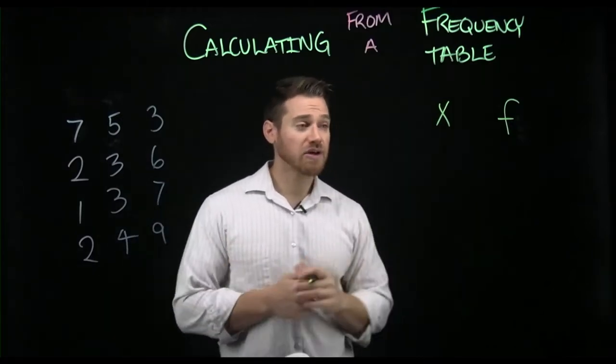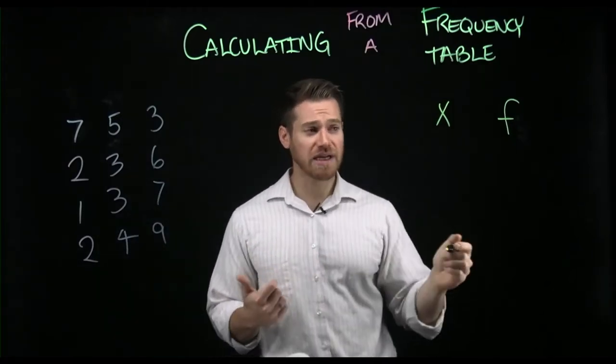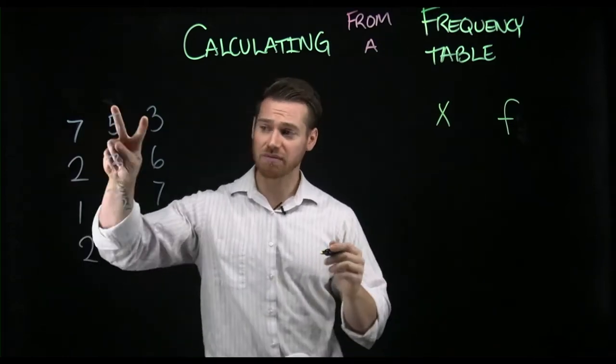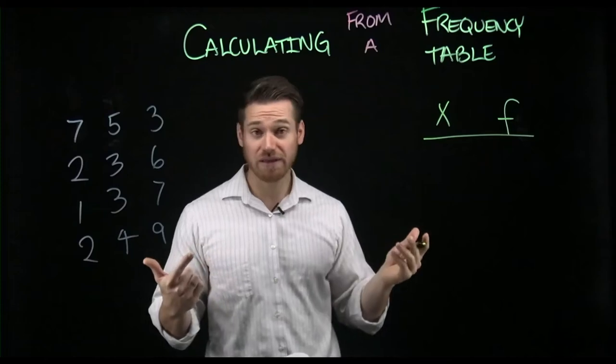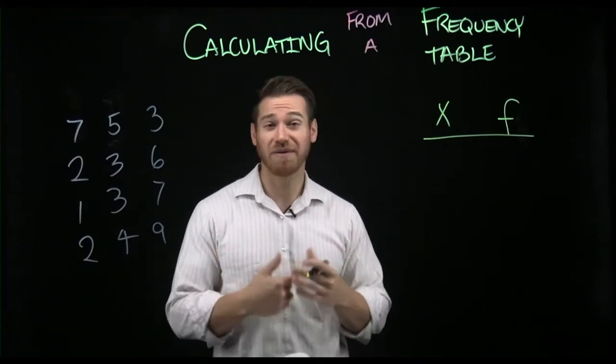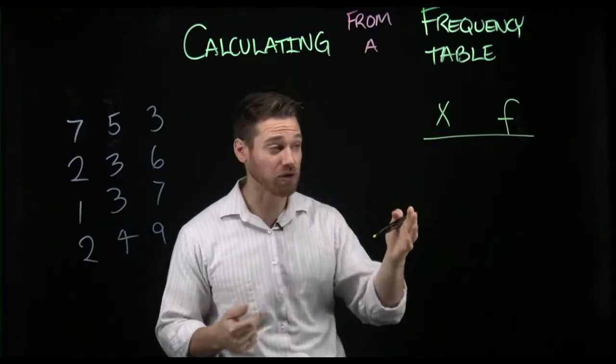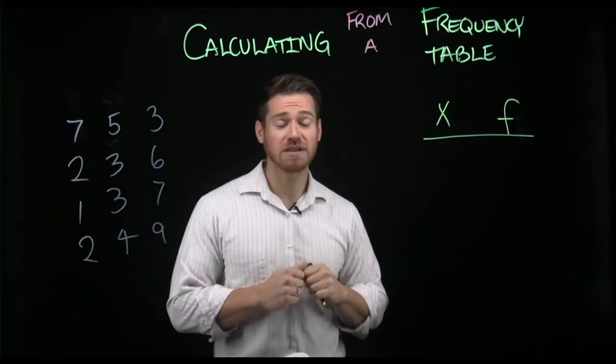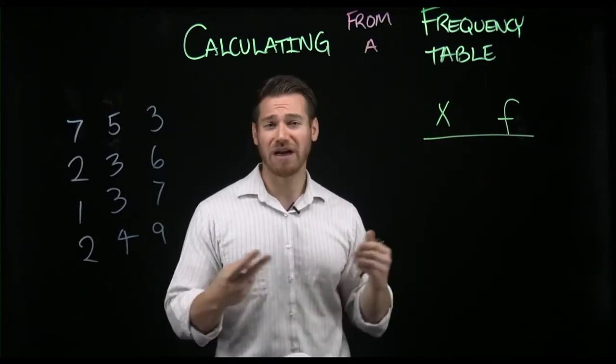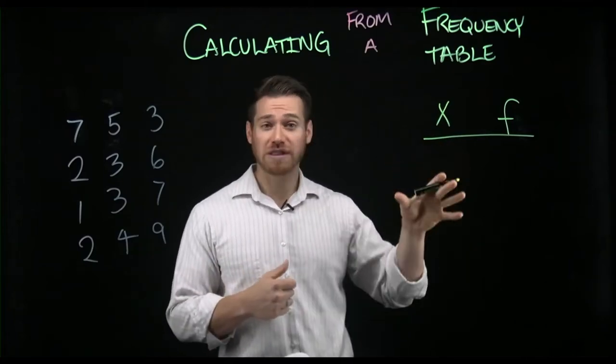In these columns, your book often goes in descending order, which means it starts with the biggest number of x and puts it at the top. Now, going in descending order isn't required. I often actually go in ascending order with the smallest number of x first. It really doesn't make any difference, but it will change, for example, how your cumulative frequencies look.